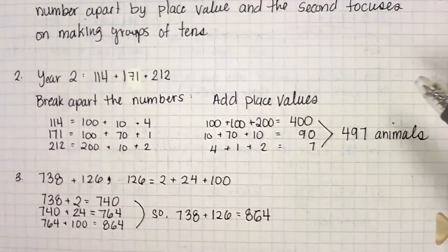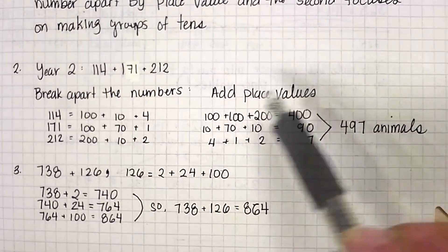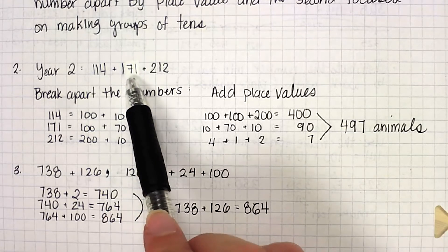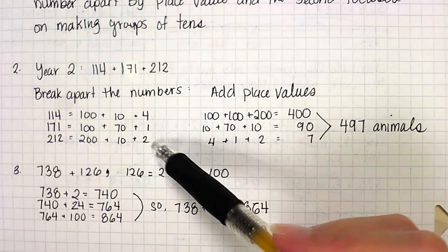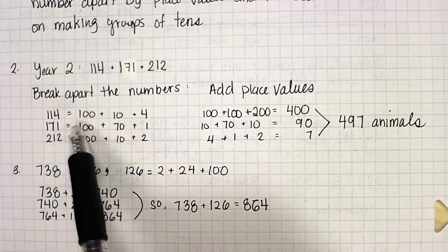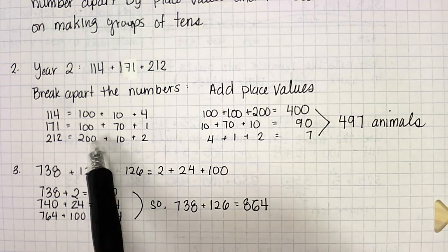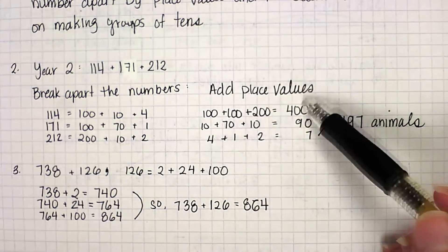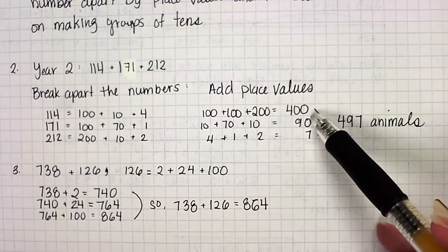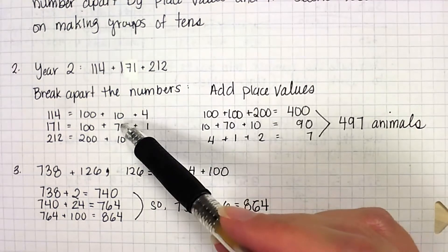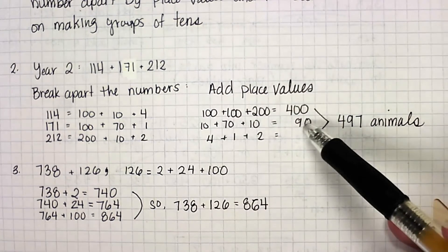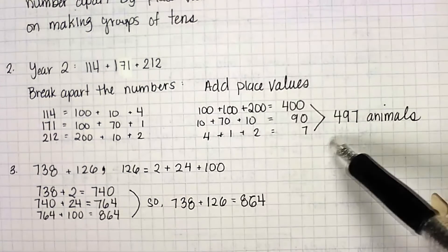For our next question, they were asking us about how many of the animals were seen in year two. This is from the example that we just saw in our video. Now, the numbers from year two are 114 and 171 and 212. So the first thing I'm going to do is break them apart into their individual place value. So 114 is 100 plus 10 plus 4. 171 is 100 plus 70 plus 1. 212 is 200 plus 10 plus 2. Now I'm adding the place value. So I'm adding all of my hundreds together. So 100 plus 100 plus 200 gave me 400. Then I'm going to add my tens. 10 plus 70 plus 10 equals 90. And 4 plus 1 plus 2 gave me 7. So 400 plus 90 plus 7 equals 497 animals that were seen during year two.